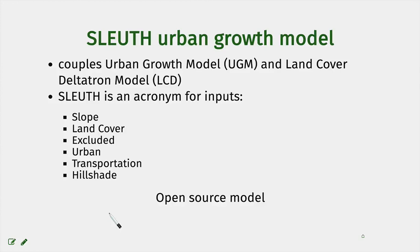One of the best known and most widely used urban growth models since the nineties is the SLEUTH urban growth model. It is a good example of a cellular automata model that couples an urban growth model with the land cover Deltatron model. The name is an acronym for its inputs: Slope, Land cover, Excluded regions, Urban regions, Transportation, and Hill shape. It is an open source model, so many people have contributed to its development.